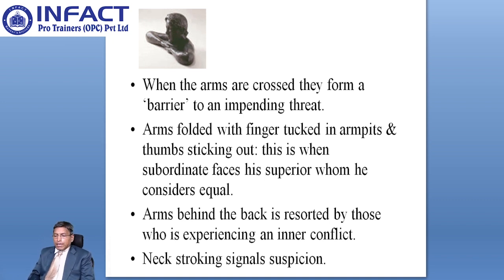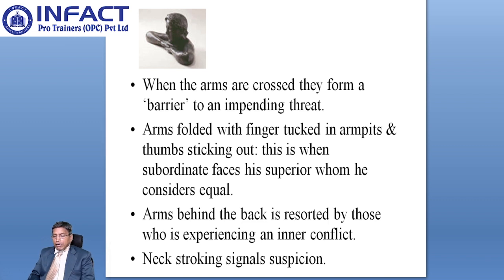Reaching forward to the other person with stretched arms can be quite scary for them, as you could attack them, and a sudden thrust forward can indeed be an aggressive signal, especially if the hand is pointing or shaped as a fist. Reaching forward can also be an offer of support or affection, seeking to touch and join with the other person. When a person feels defensive, they may pull back their arms out of harm's way.